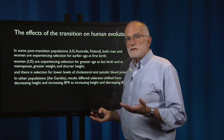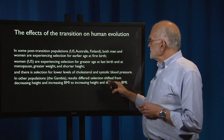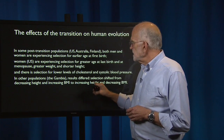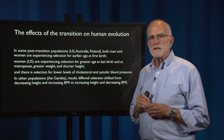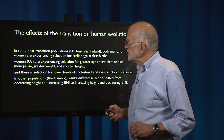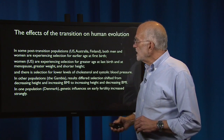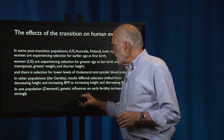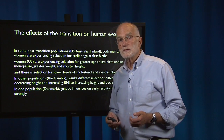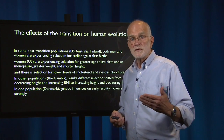In other populations — in this case the Gambia — the results differed. Selection shifted from decreasing height and increasing body mass index to increasing height and decreasing body mass index as the population moved through the demographic transition around 1975. In one population in Denmark, the genetic influences on early fertility increased strongly, exposed by changes in nutrition and technology.